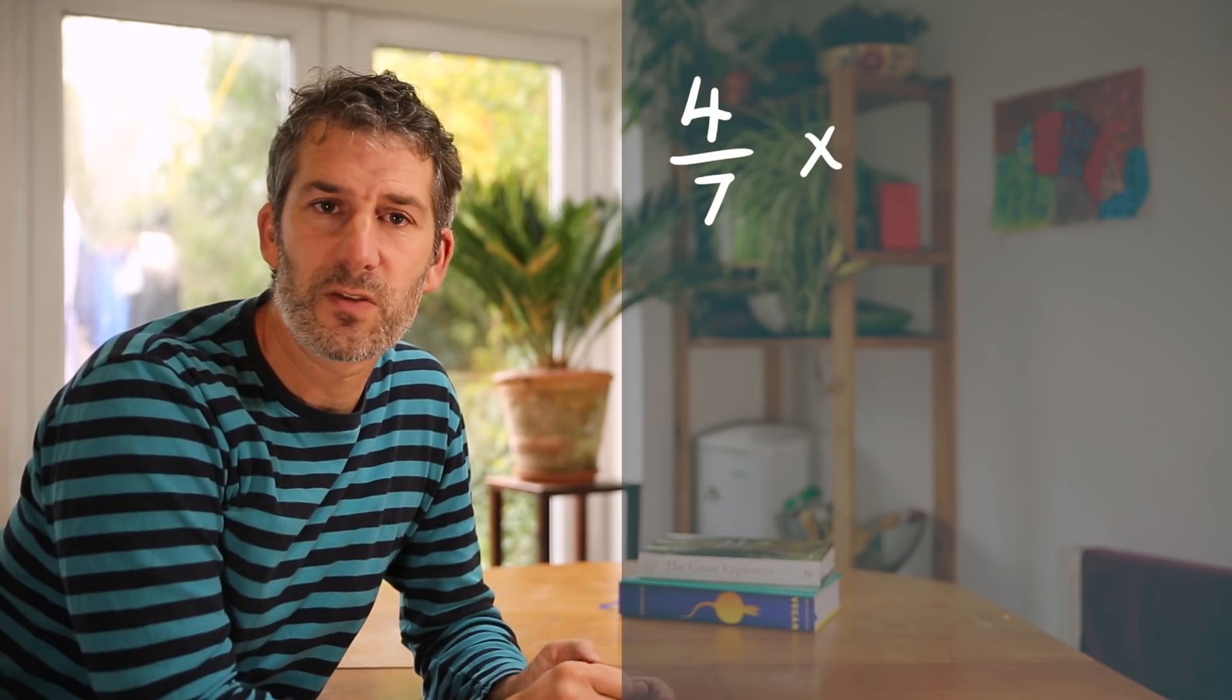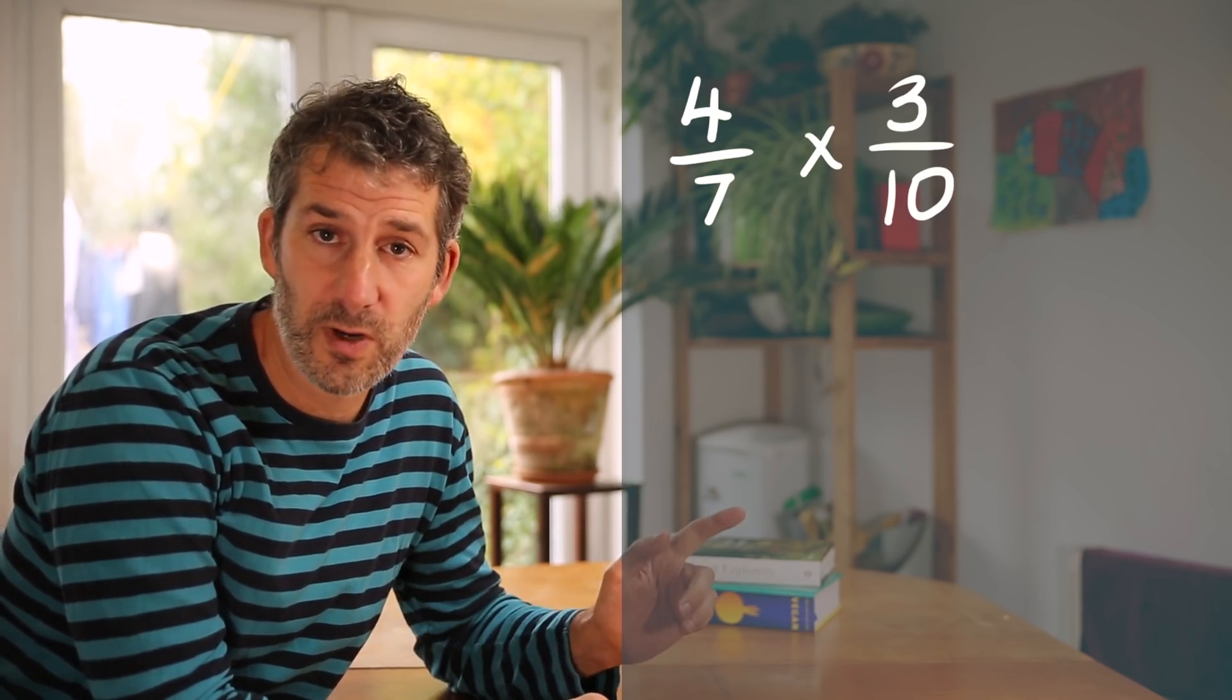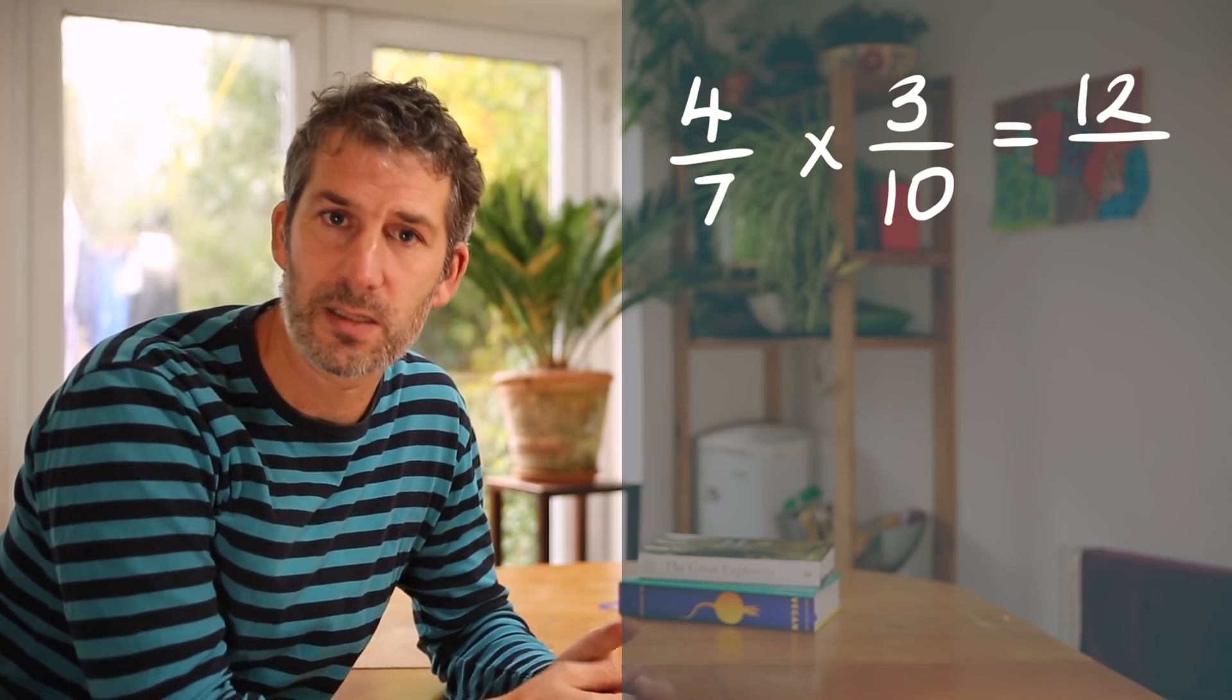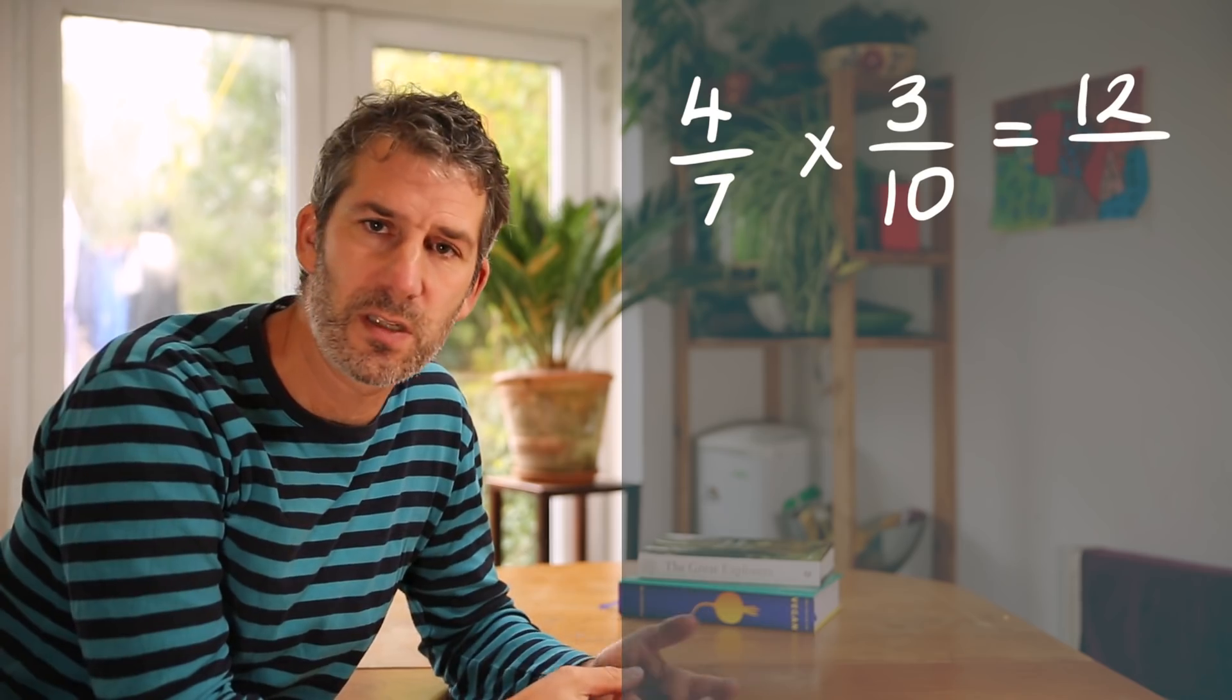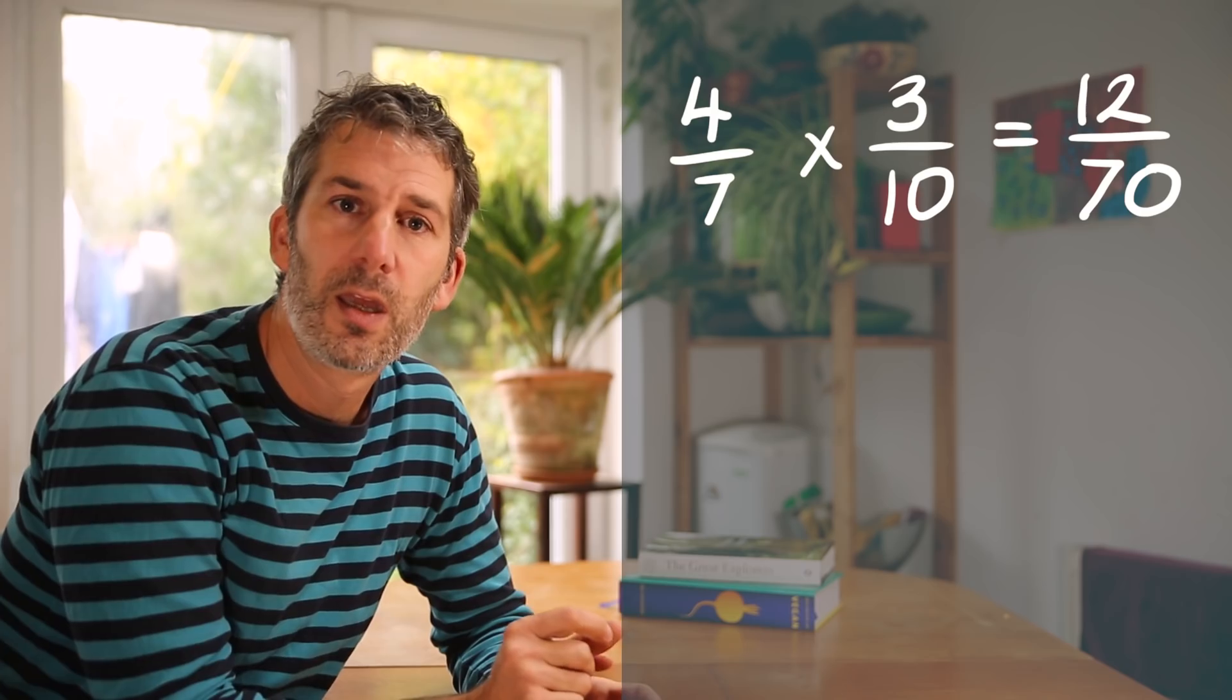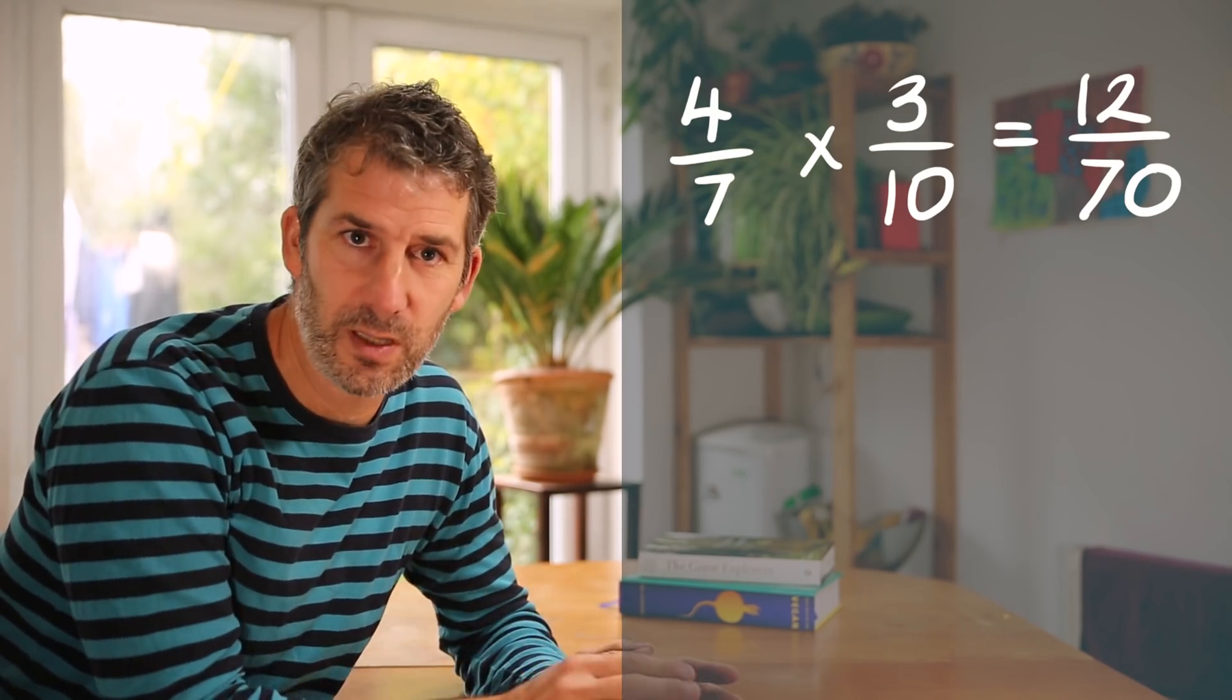So the first one. Four sevenths times three tenths. All we have to do is multiply the numerators together. Four times three, which is twelve. And then multiply the denominators together. Seven times ten, which is seventy. So four sevenths times three tenths is twelve seventieths. Now that answer could be simplified but that's for another video.